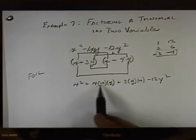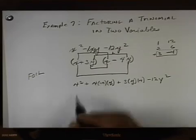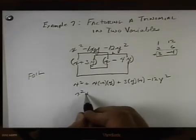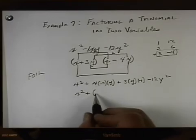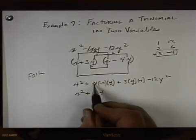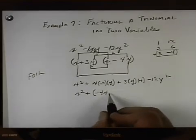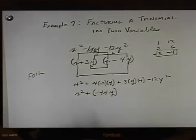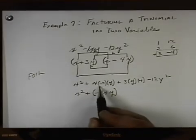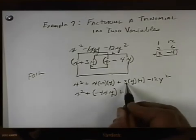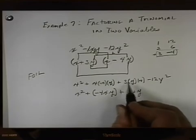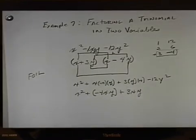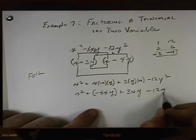This is X times minus 4 times Y. Let's always put the number first. So this is going to be X squared plus, we'll keep a parenthesis here because of our sign, minus 4. Then we'll put the X times Y. I just rewrote this number. Plus, we'll put the number first, and then the X, and then the Y. When we're multiplying like that, it doesn't matter what order they're in. Minus 12Y squared.